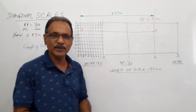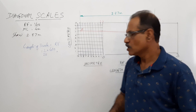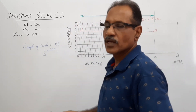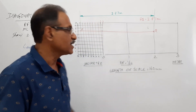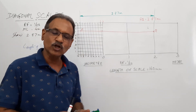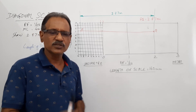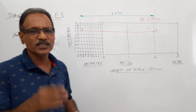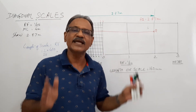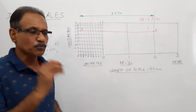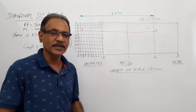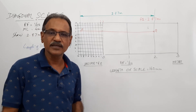This is the simplest question you can expect from diagonal scale. What is the advantage of a diagonal scale? You have a main unit, its subdivision, and its subdivision again. The smallest distance that can be represented — the least count — is one centimeter in this case. Suppose the question says the smallest distance to be shown is 5 mm (half centimeter). What do you do? You have to divide the vertical distance into 20 equal parts.